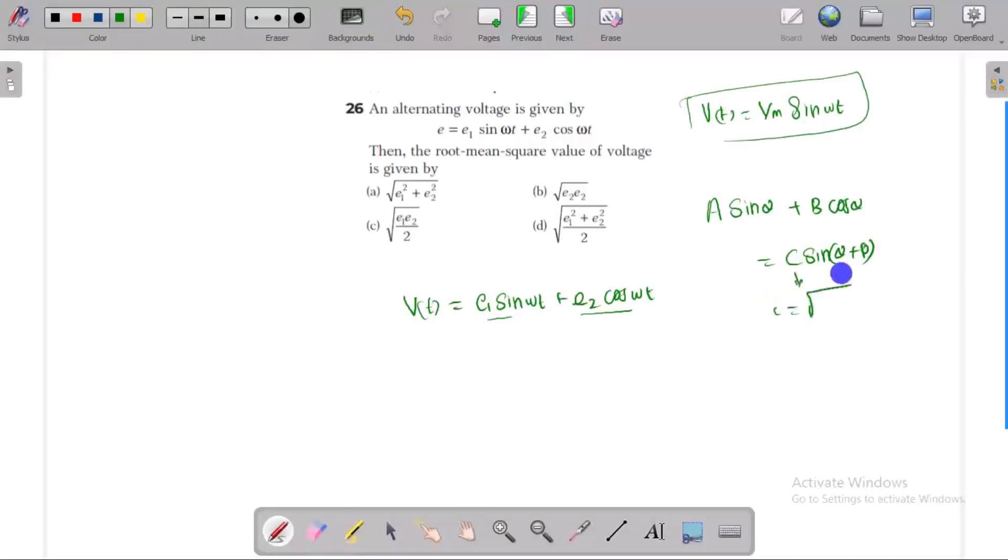This is a general trigonometric relationship. It's equal to C. What is the value of C? We use the formula: C equals square root of a squared plus b squared. Now I'm going to use this method.